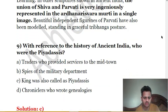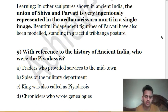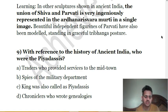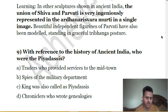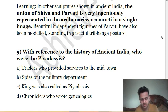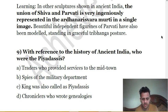Ninth and last question: with reference to the history of ancient India, who were the Piyadasis? A. Traders who provided services to the mid-town. B. Spies of the military department. C. King was also called Piyadasis. D. Chronicles who wrote genealogies. The correct answer is C — the king was also called Piyadasis. This mention is found in the inscriptions of Ashoka, which were deciphered by James Prinsep, who deciphered Brahmi and Kharosthi scripts. Ashoka referred to himself both as Piyadasis — meaning pleasant to behold — and Devanampiya, meaning beloved of the gods.